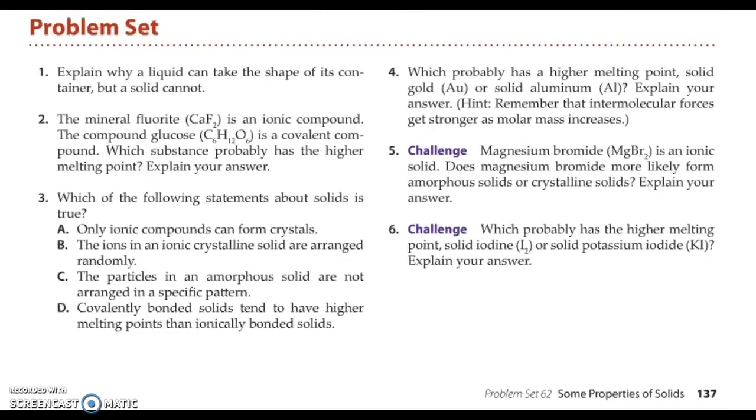And question 3. Which of the following statements about solids is true? A. Only ionic compounds can form crystals. B. The ions in an ionic crystalline solid are arranged randomly. C. The particles in an amorphous solid are not arranged in a specific pattern. D. Covalently bonded solids tend to have higher melting points than ionically bonded solids. So hit pause, get your answer.